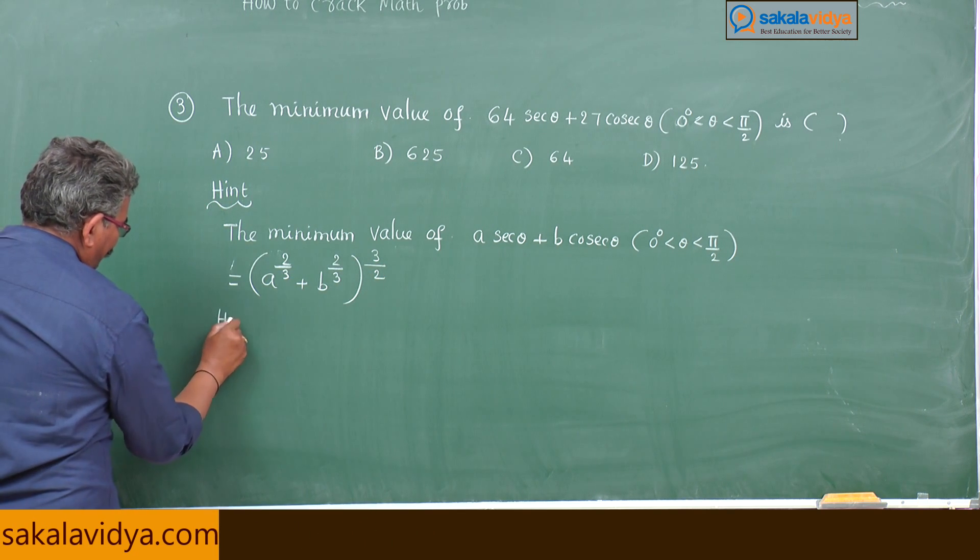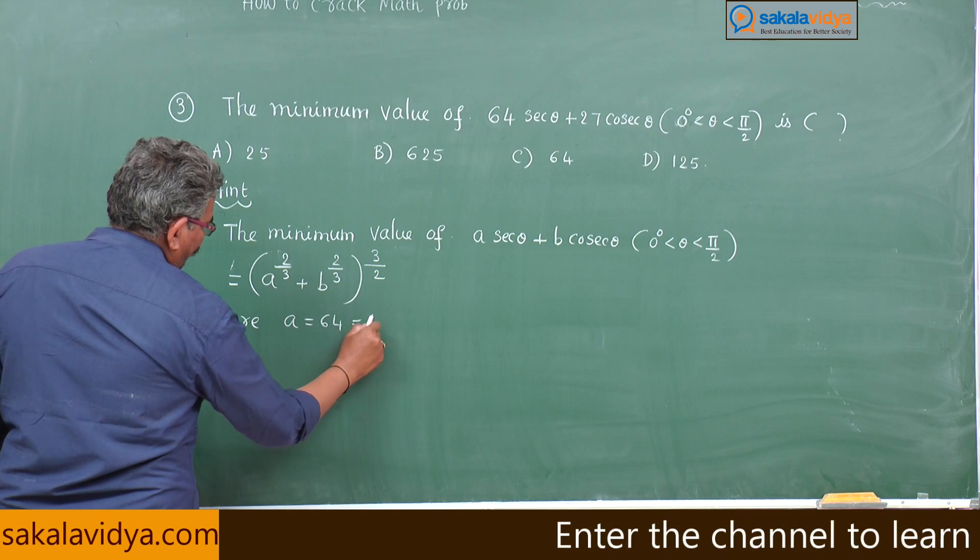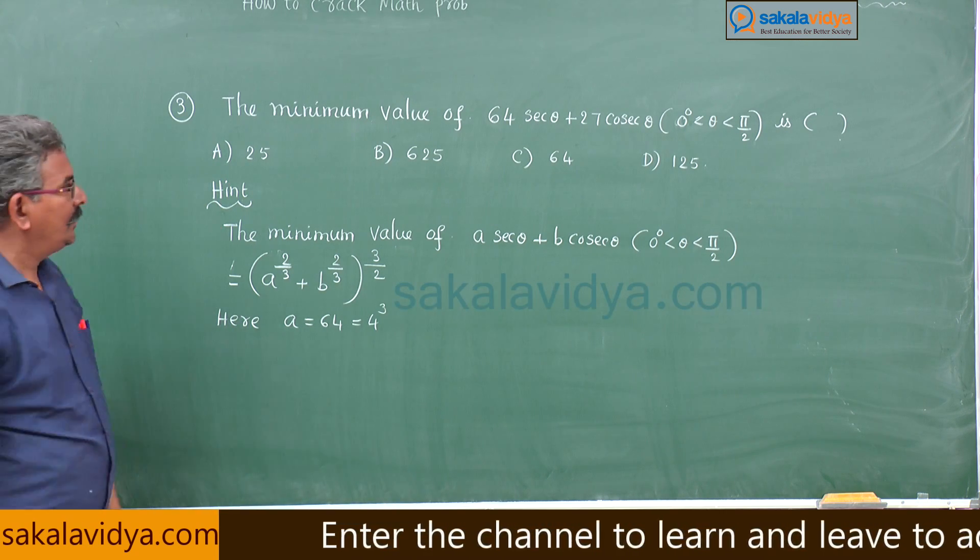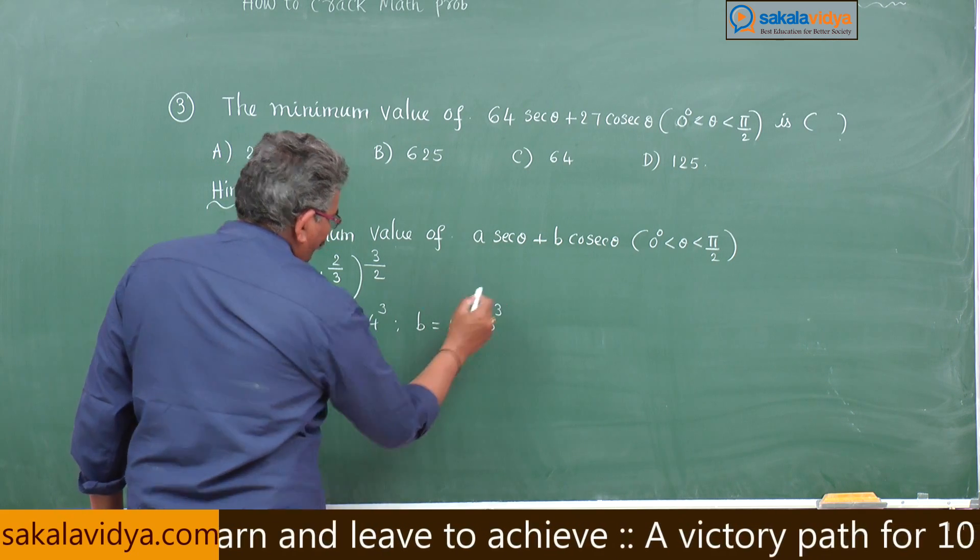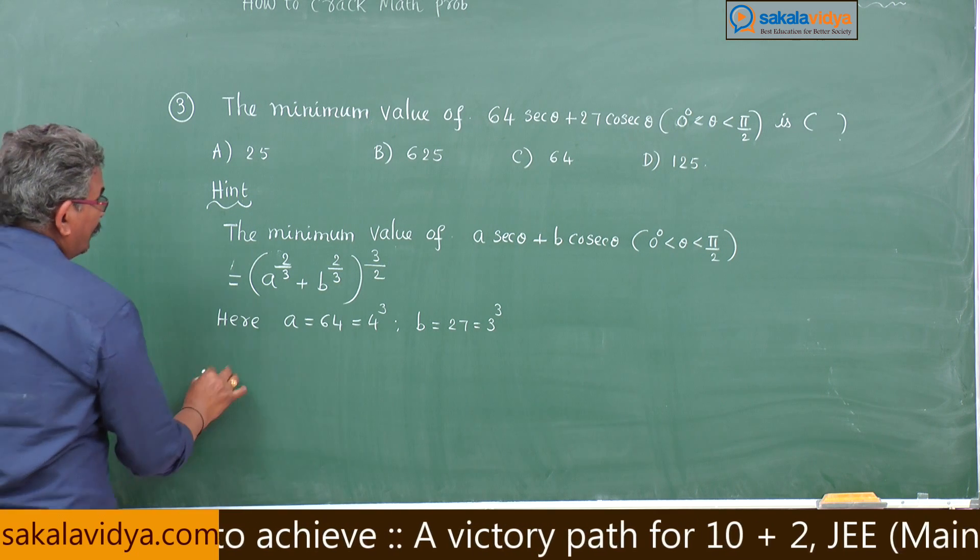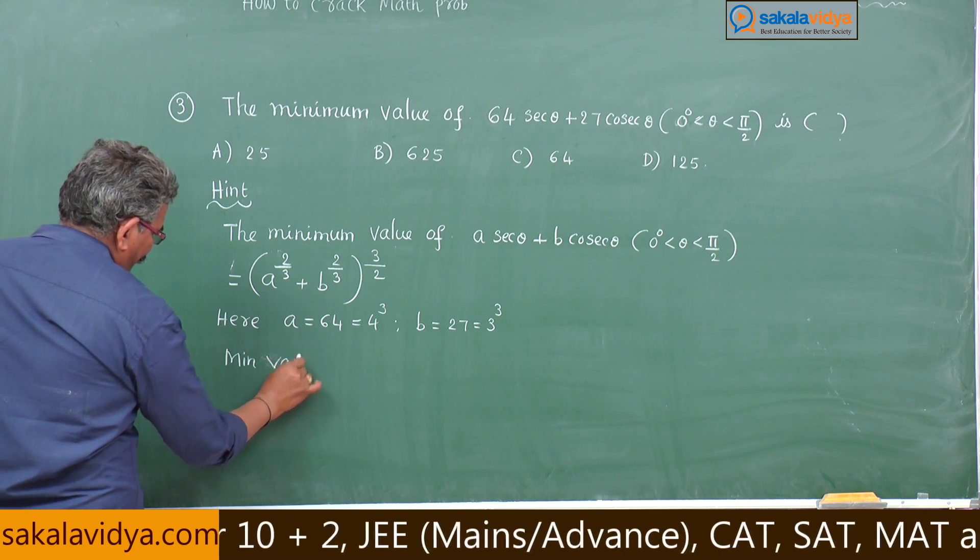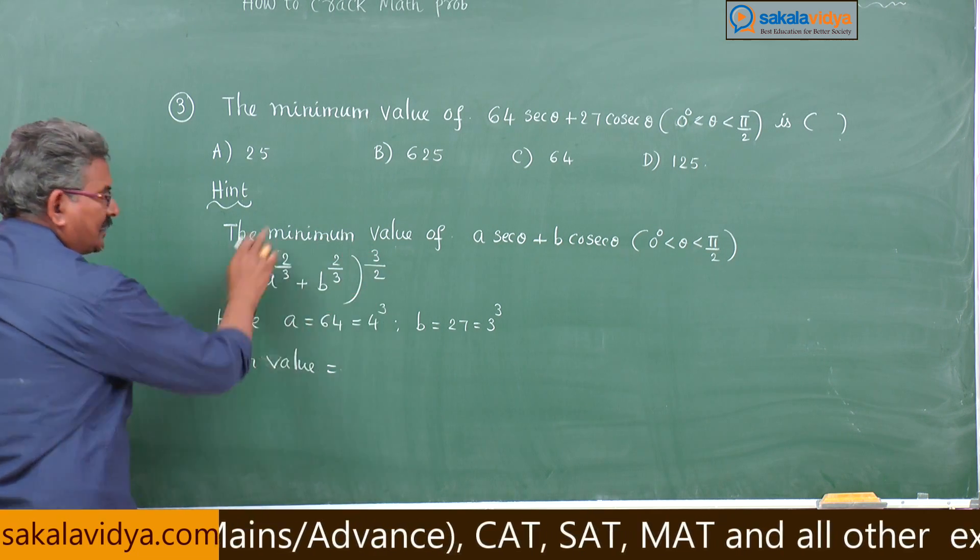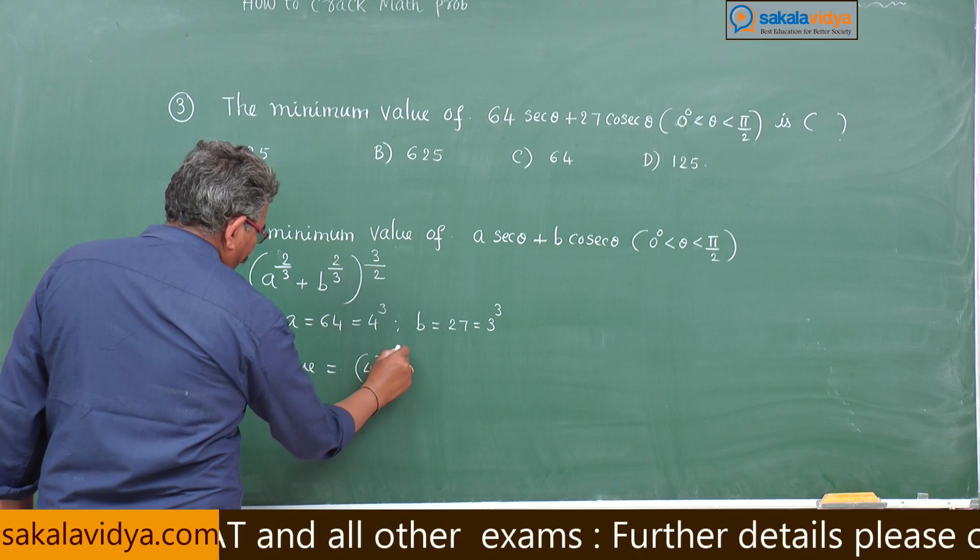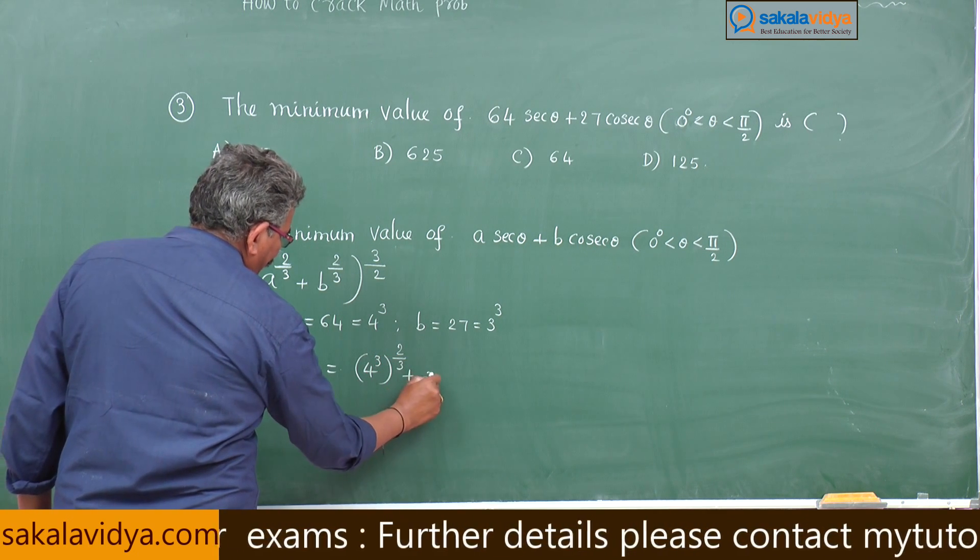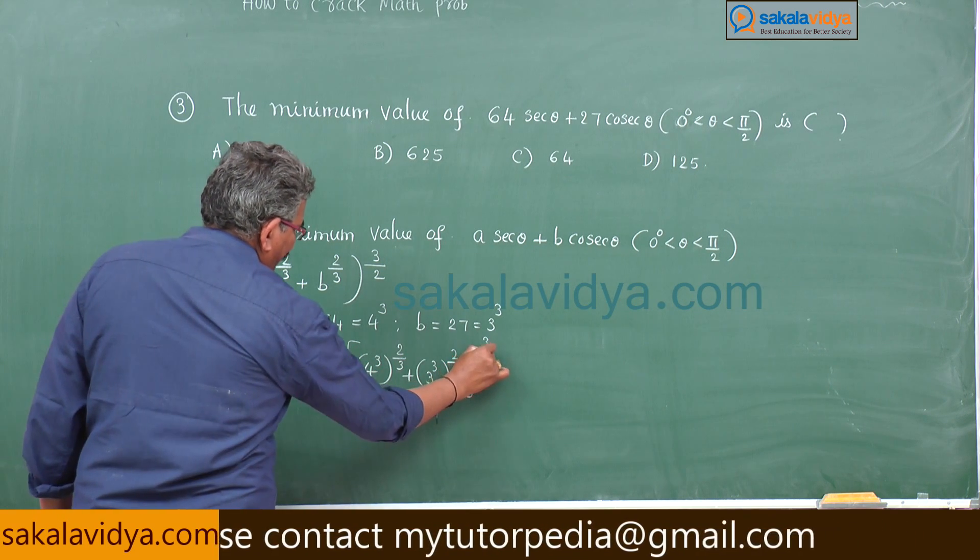In this problem, a stands for 64, nothing but 4 cube. b stands for 27, this is also perfect cube, 3 cube. So the minimum value equals, substituting in this formula, (4³)^(2/3) + (3³)^(2/3), whole to the power of 3 by 2.